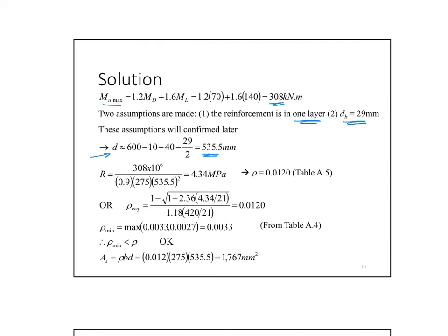We calculate from M dead and M life what MU is. This gives 308. Two assumptions are made. Number one is that the reinforcement is on one layer. Number two is that diameter of the bar is 29 because I don't know the diameter yet. I don't have the reinforcement. What do I do? I just calculate D based on this assumption and this equals 535. Now, if things become really different, we can change later. But this is our first assumption to start with. Now, I calculate R based on MU. So this here is my MU. I substituted. Remember what my R equation is? Phi MN was equal to phi RBD squared.